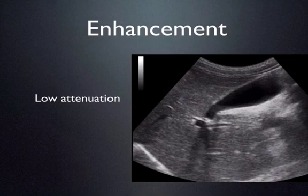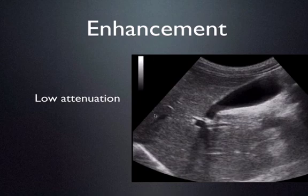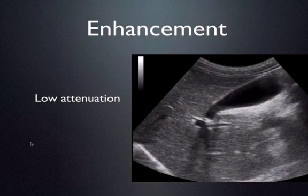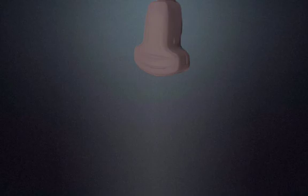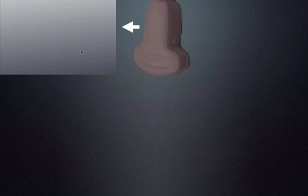Now let's talk about another artifact: enhancement. Take a look at this part of your ultrasound image and compare it to this other part. You can see this area is very hyperechoic relative to the other section, even though it's the same tissue — it's both liver. Why is this part hyperechoic and this part not? Normally your ultrasound beam is produced and it evenly attenuates as it moves down through the tissues, giving a homogeneous gray screen assuming no targets are changing that attenuation.